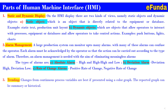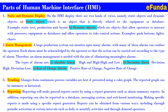Third, trending: changes from continuous process variables are best presented using a color graph, and the reported graph can be summary or historical. Fourth, reporting: reporting will make general reports easier by using a report generator such as alarm summary reports. In addition, reporting can also be done in a database, messaging system and web-based monitoring. Making specific reports uses a specific report generator. Reports can be obtained in various ways including through periodic activation at certain intervals such as daily or monthly activities, and through demand by the operator.